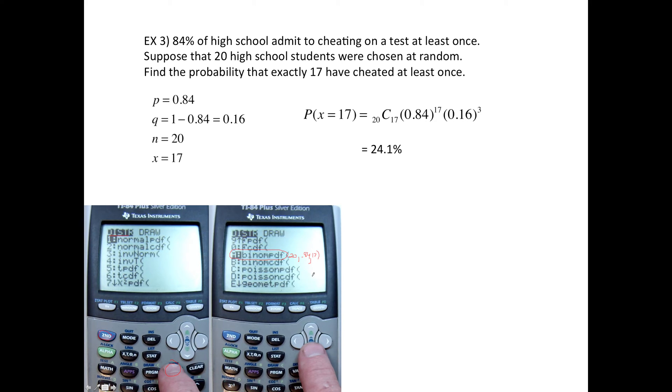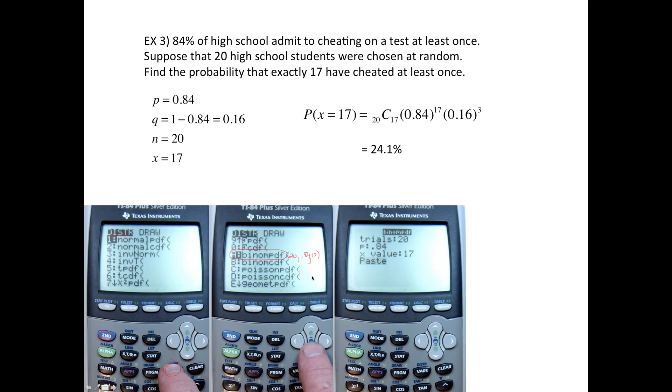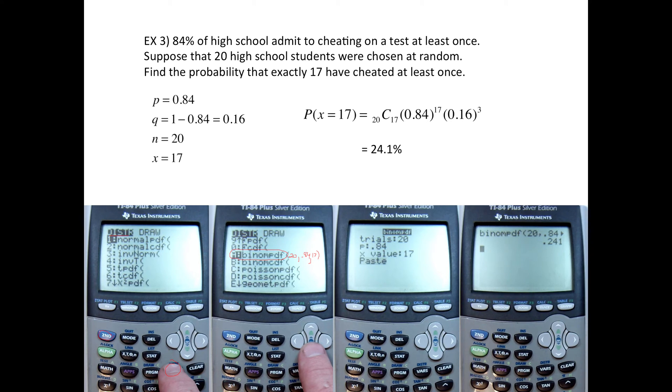Or, if you have a newer operating system, it's going to look like this. Put the trials, which is n, the p, 0.84, then the 17. And when you hit paste, it's going to do this exact thing that we did in the older type calculator. So it would then look like that. After you hit enter, then it tells you 24.1% is the answer.